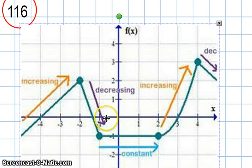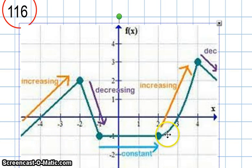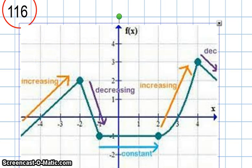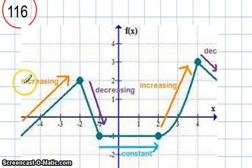We have actually a piecewise function — part absolute value, part linear, part quadratic, and part linear again. So here we have an example of a piecewise function, and in different areas it's increasing and it's decreasing.